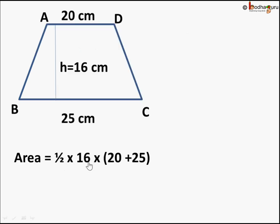Half into height which is 16 into sum of the parallel sides which is 20 cm plus 25 cm. We can simplify. 2 and 16 gets cut. So we get 8 and 20 plus 25 is 45. 8 into 45 is 360 square cm. So the area of this trapezium is 360 square cm. Centimeter into centimeter became square cm.